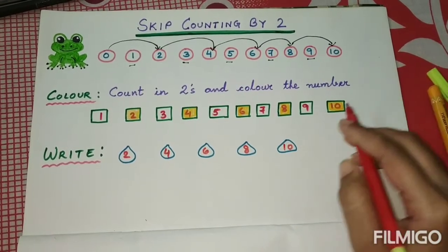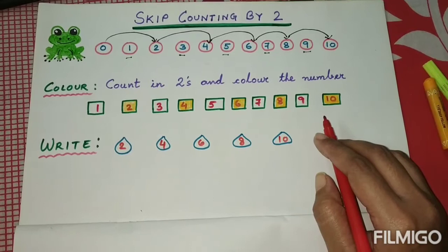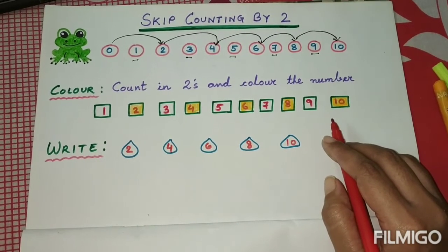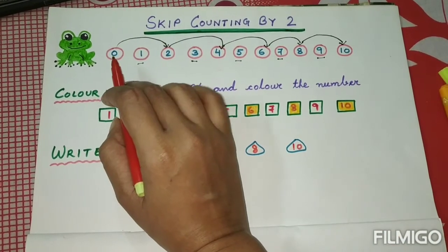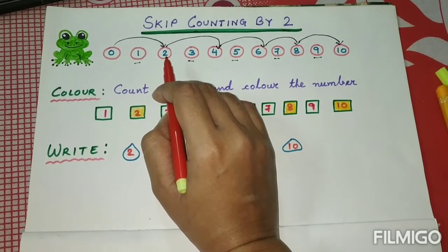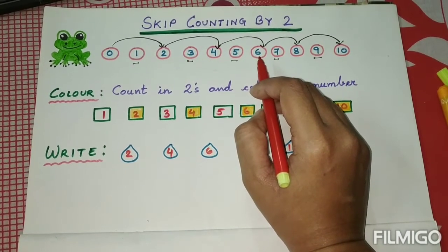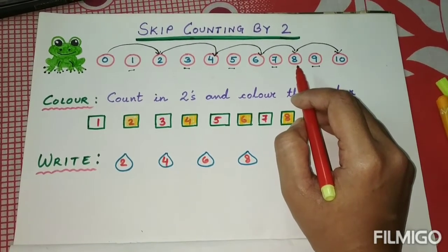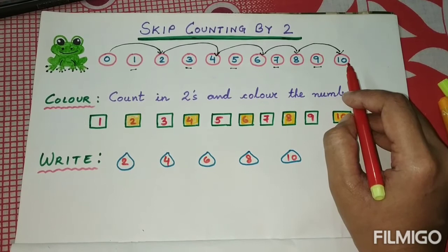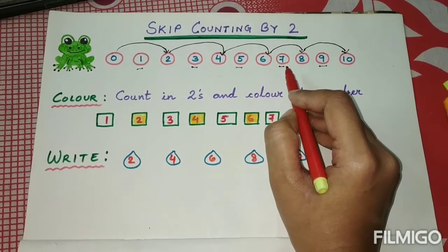This is all about skip counting by two. Skip counting means the numbers we count while skipping some numbers in between. From zero the frog jumped to two, then to four, then to six, then to eight, and finally to ten. The numbers which the frog skipped are one, three, five, seven, and nine. Thank you.